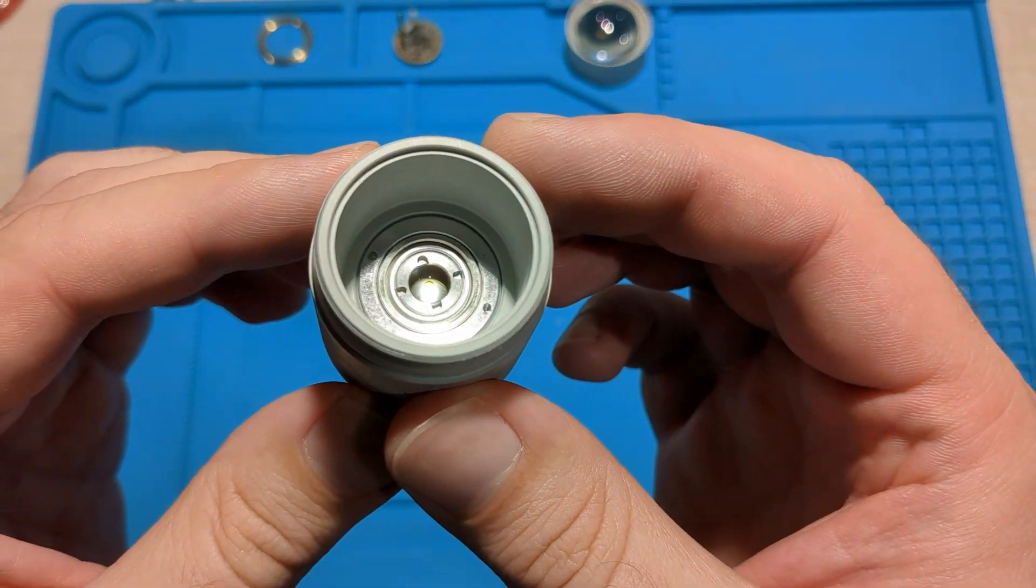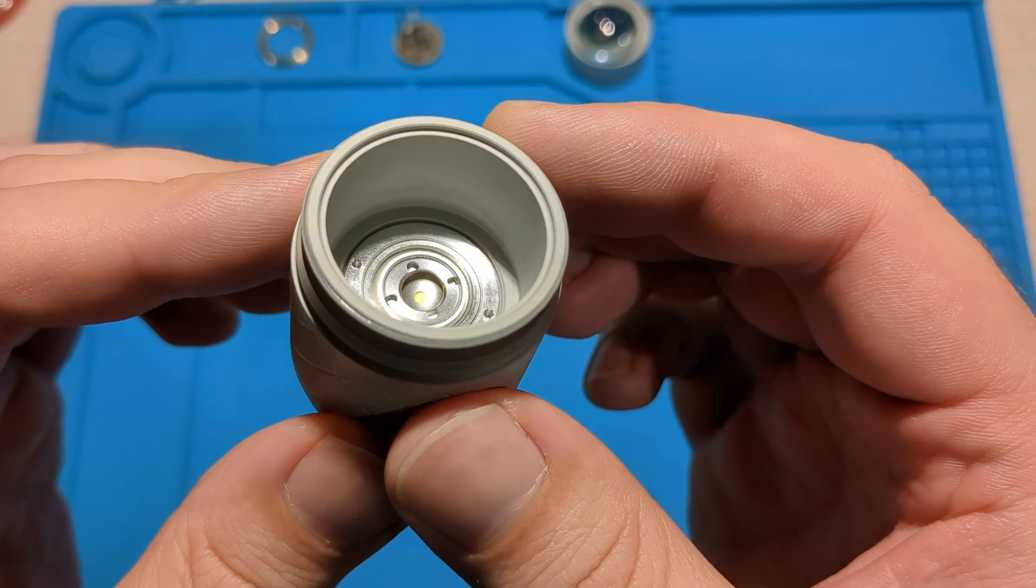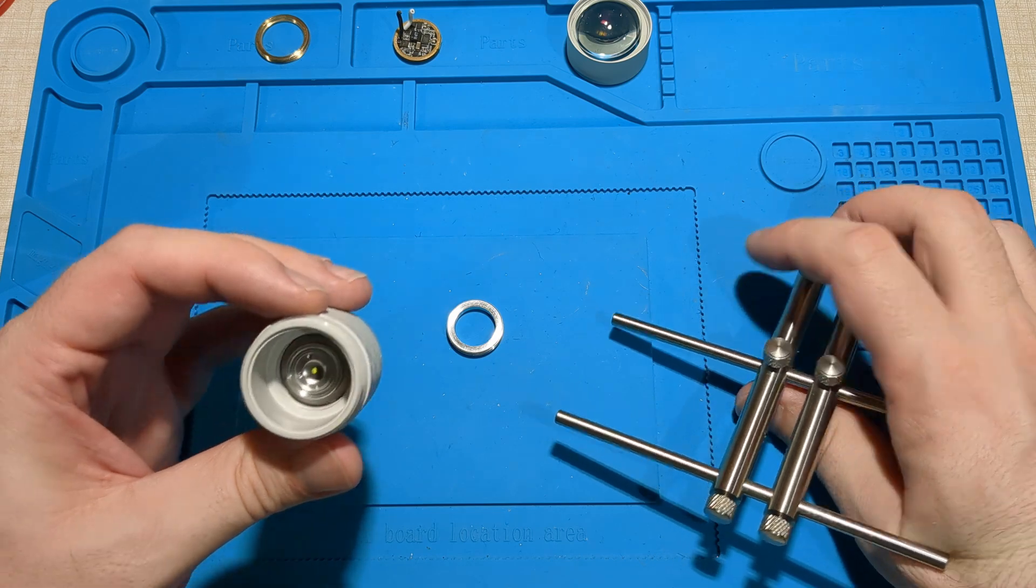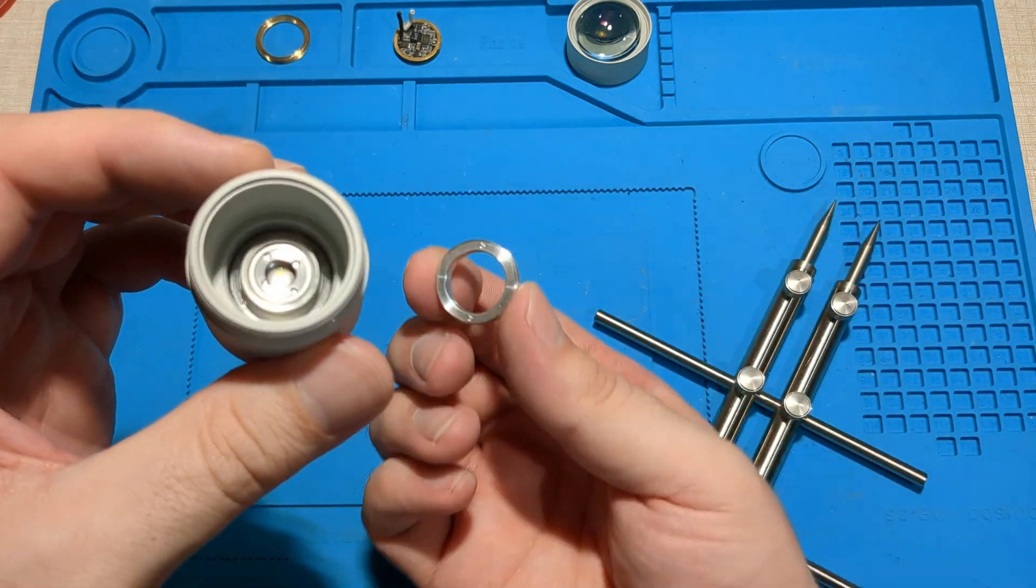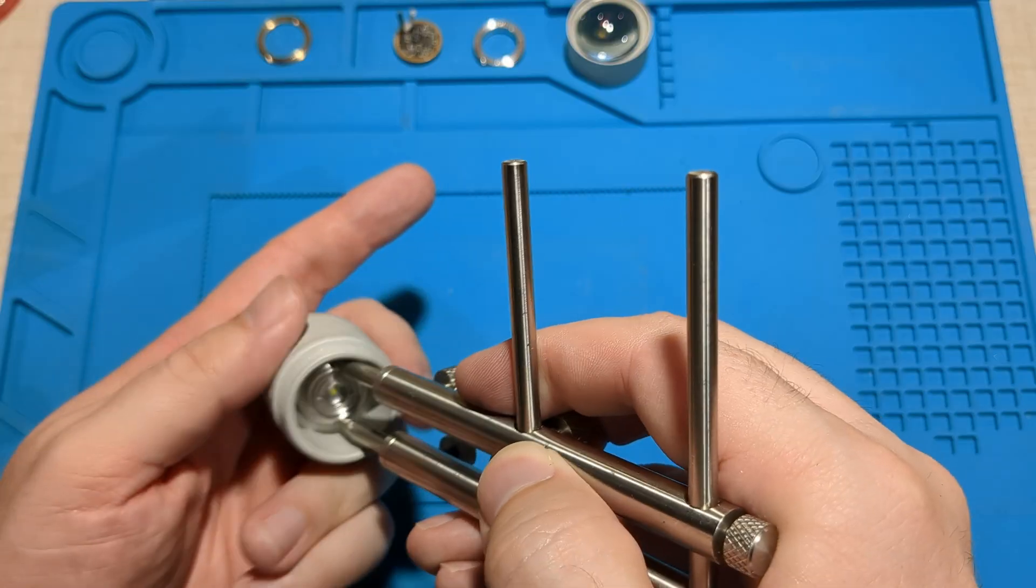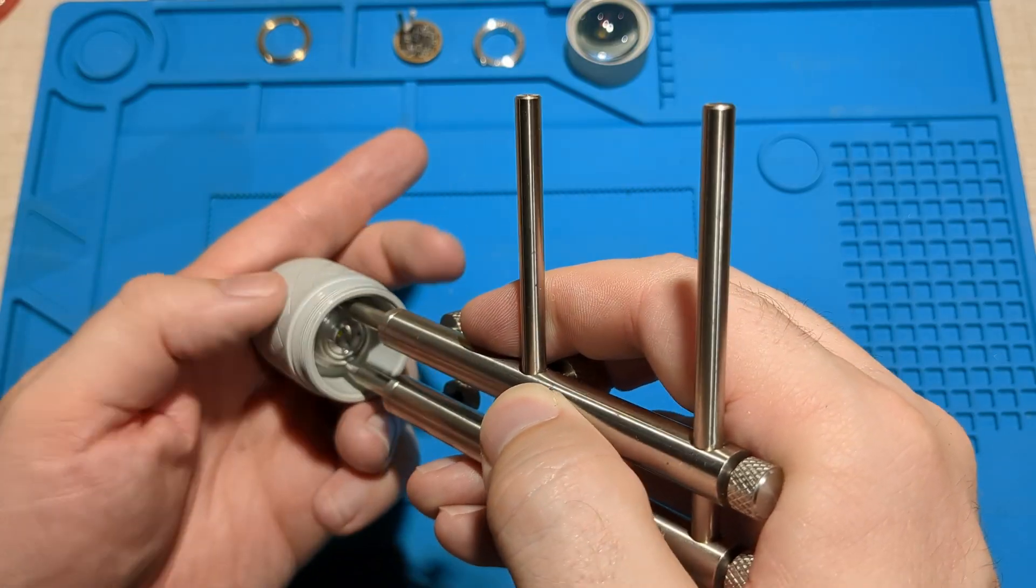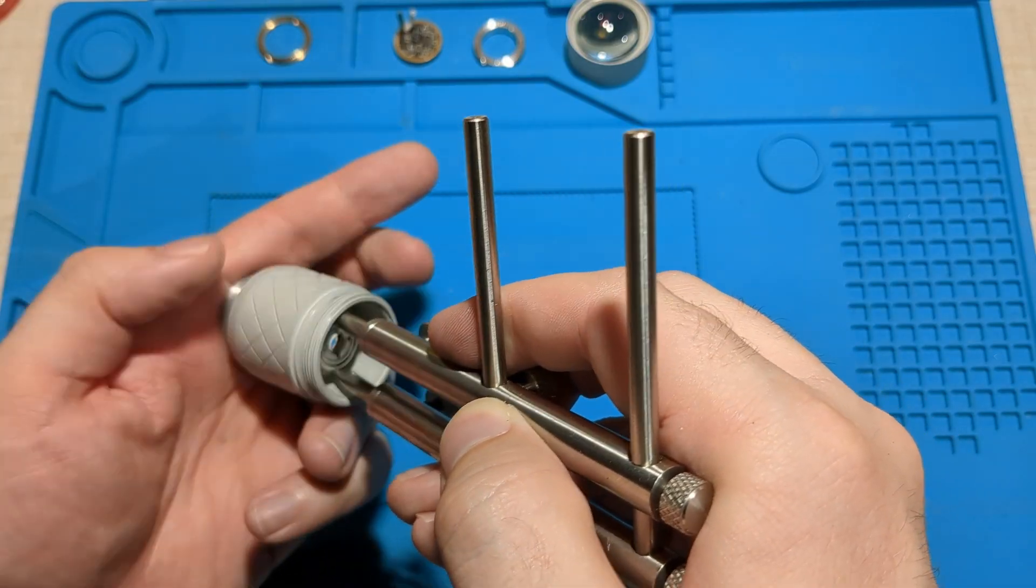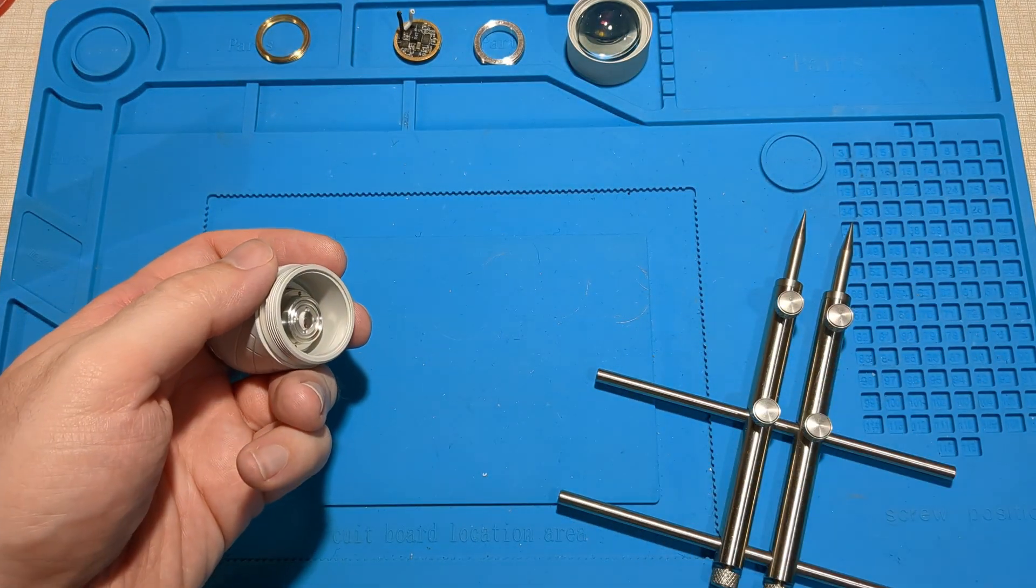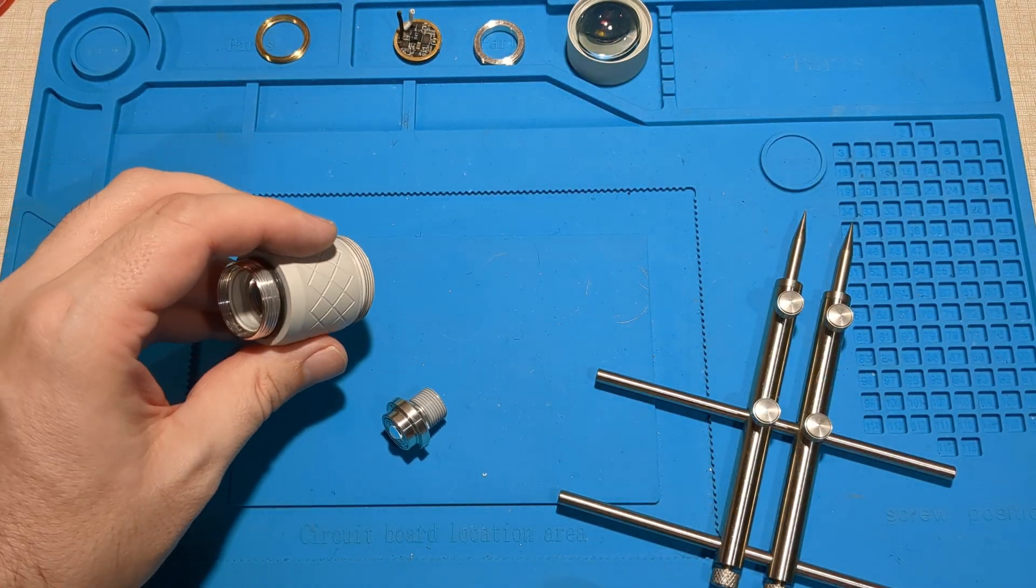So here is the laser excited phosphor module. Let's go ahead and open this up. So there is another retaining ring. There's a lot of retaining rings in this thing. There we go. That is the module.